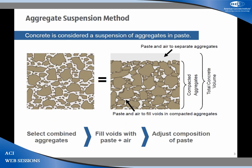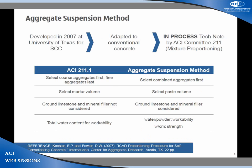The method I will talk about today is the aggregate suspension method, which I worked on developing based on other researchers' work, and we are now looking at it in ACI 211. The concept is that all aggregates — fine, intermediate, and coarse — form a suspension in cement paste. We have two fractions: the aggregate fraction and the paste. We optimize both and combine them. Originally published in 2007 and adapted from SCC to conventional concrete, ACI 211 is developing a tech note based on it.